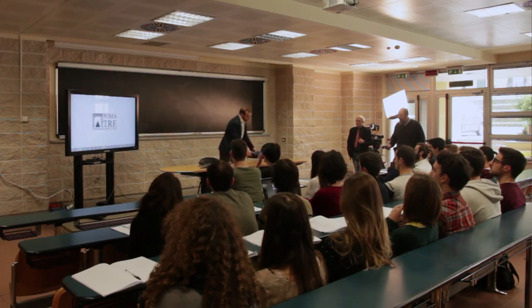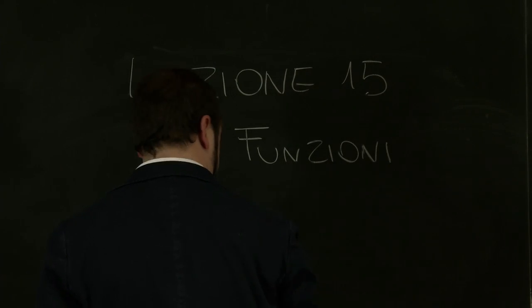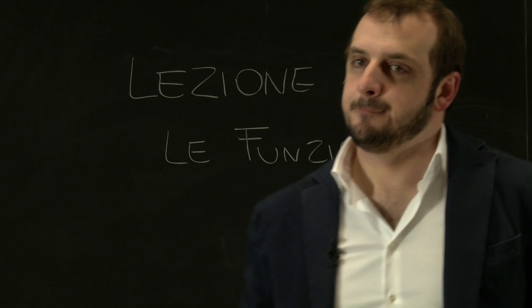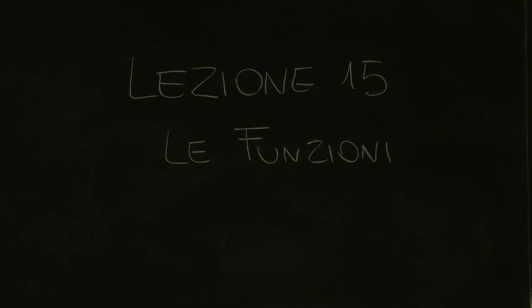Good morning everyone. In this lesson we will talk about functions. Prima di parlare delle funzioni, andiamo a vedere come la matematica definisce quelle che sono le relazioni binarie o corrispondenze tra insiemi. Una relazione binaria, ovvero una corrispondenza tra due insiemi A e B, fa corrispondere gli elementi dei due insiemi secondo una particolare legge. È quindi possibile rappresentare le relazioni in quattro modalità differenti.